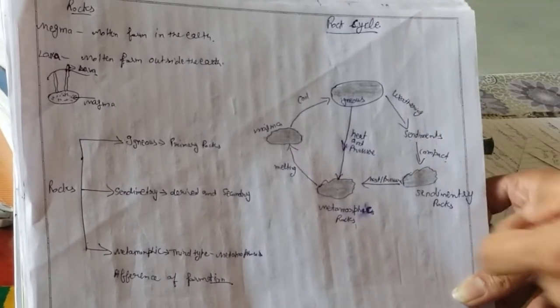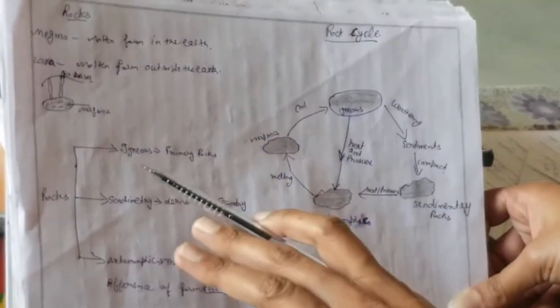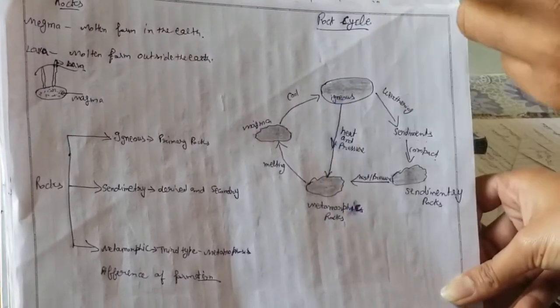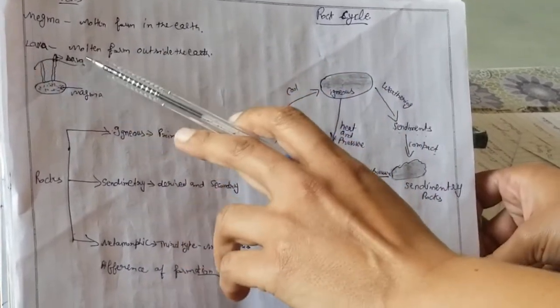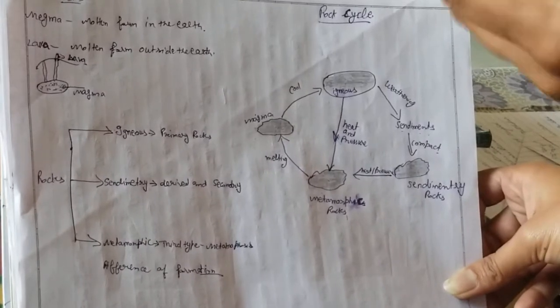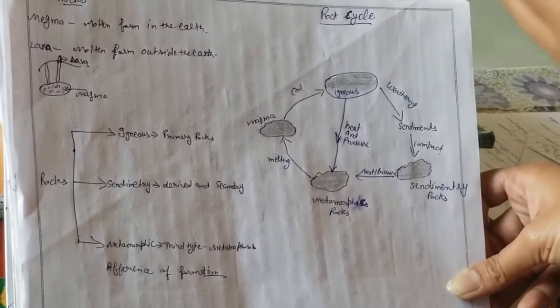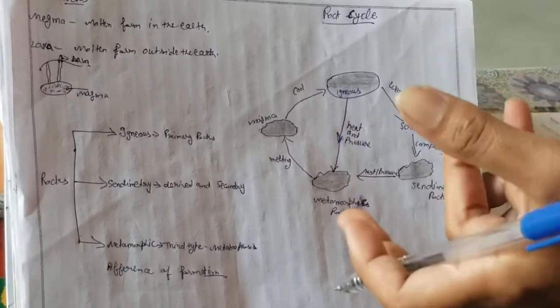When we go to the surface of the earth, we will use the temperature and pressure. The magma is the molten form inside the earth, and lava is the molten form outside the earth.